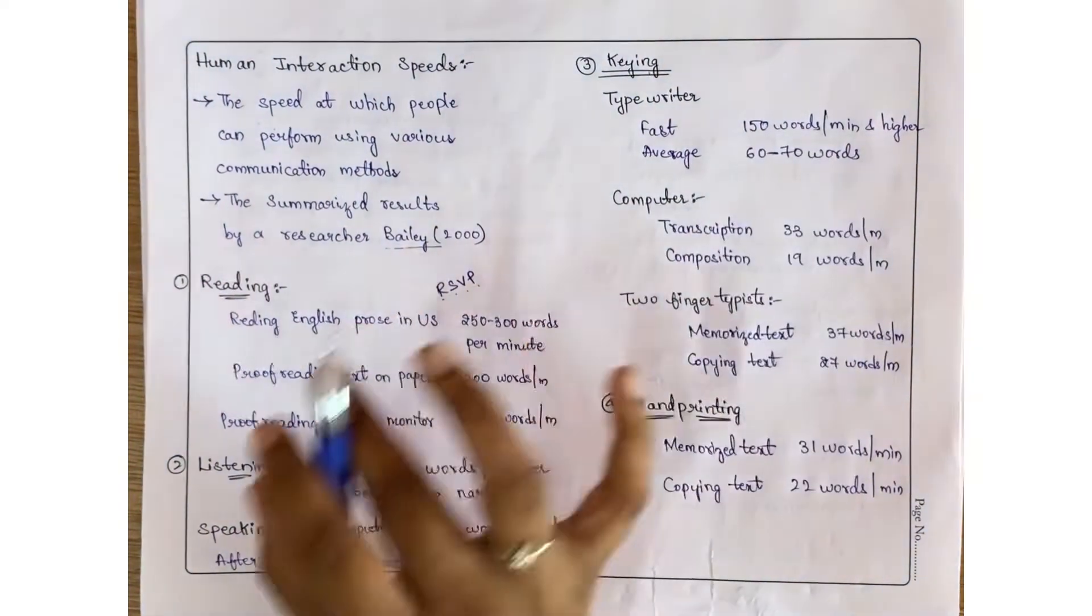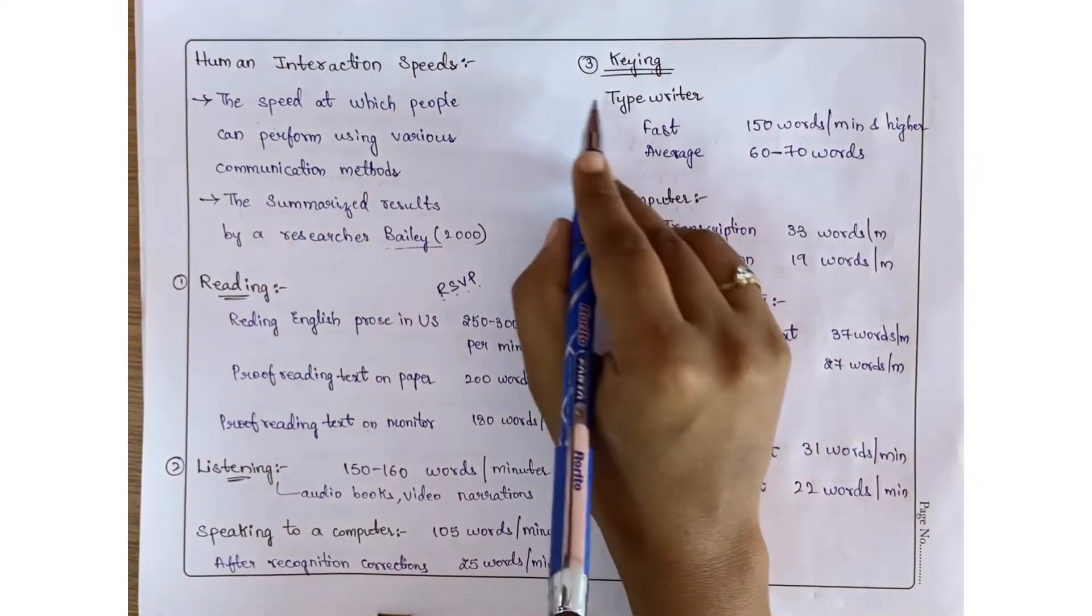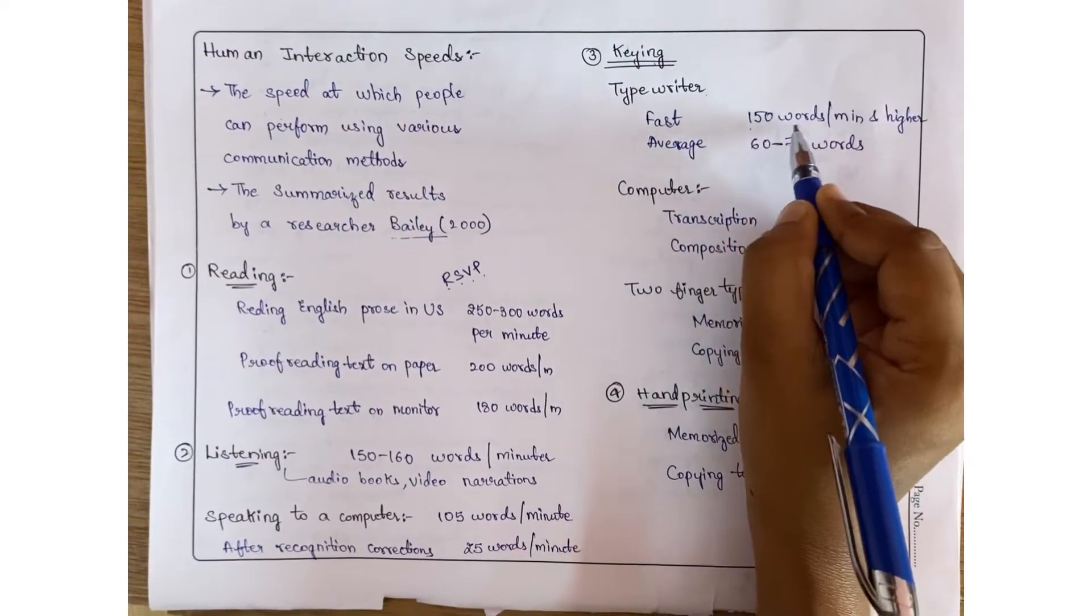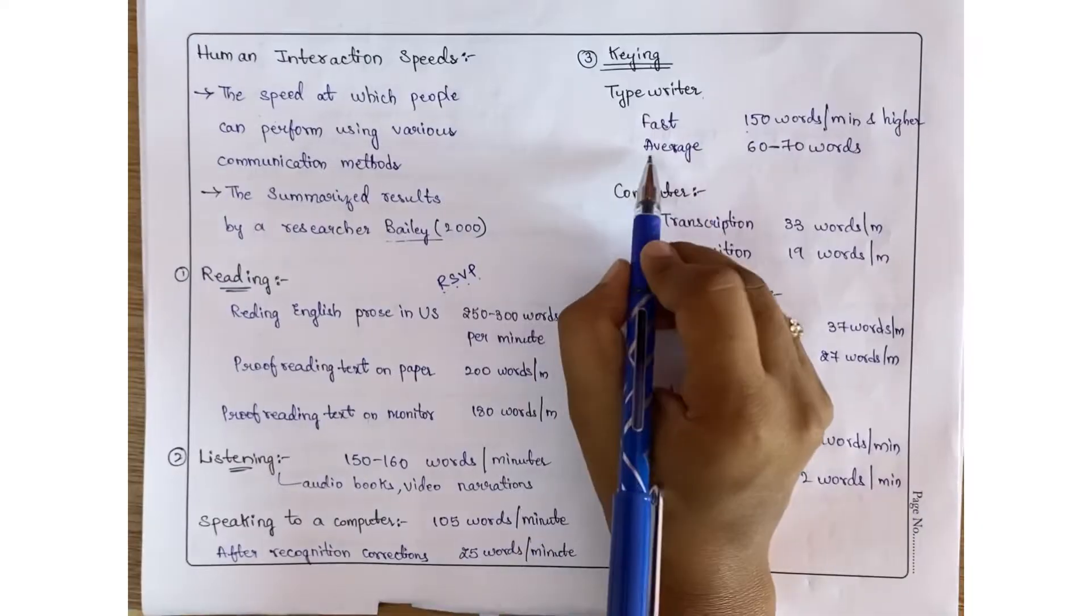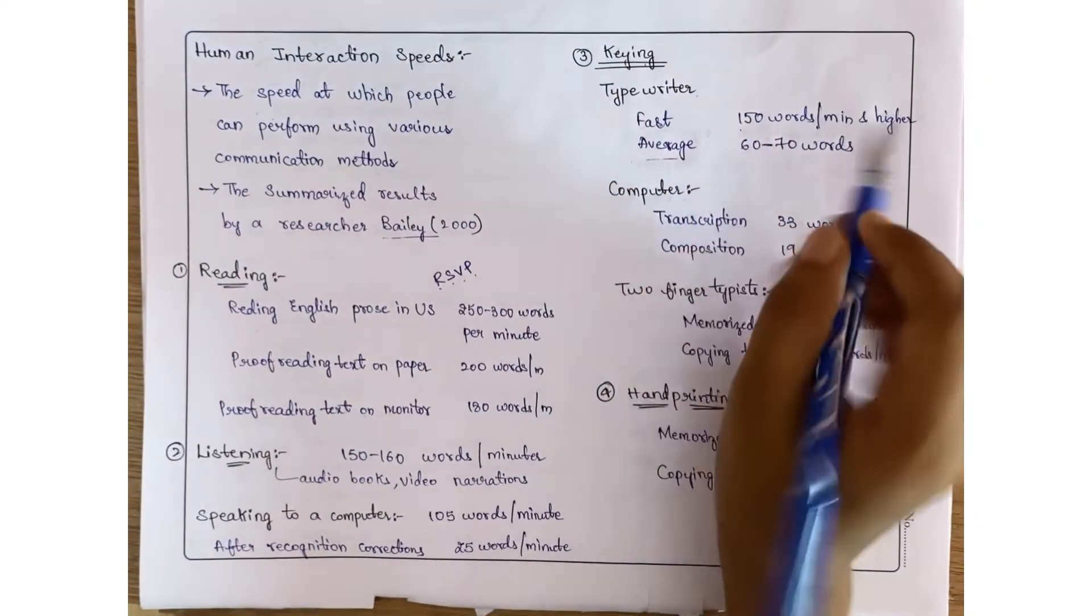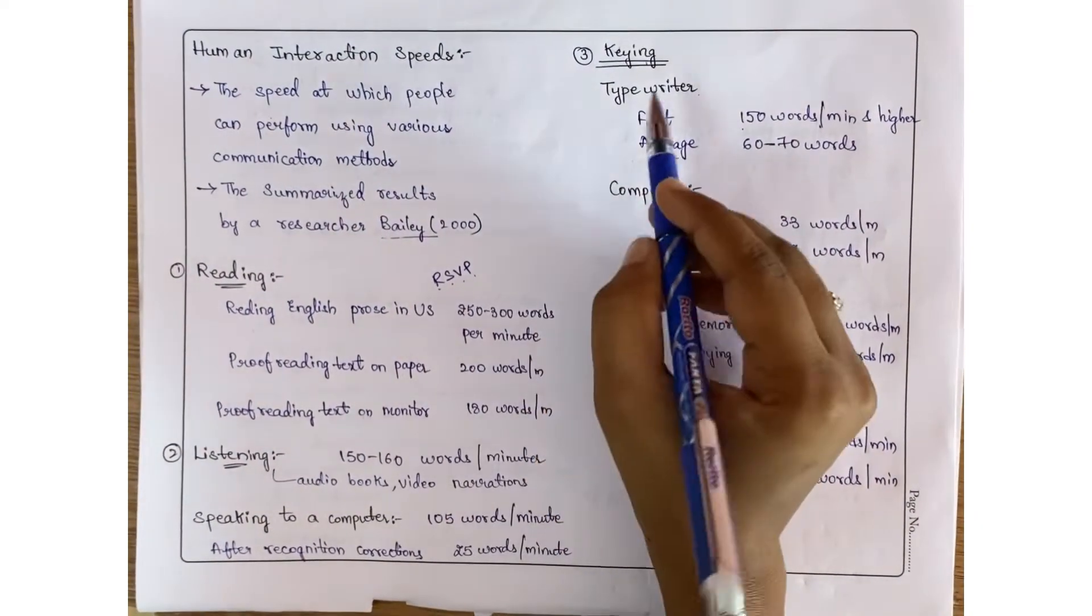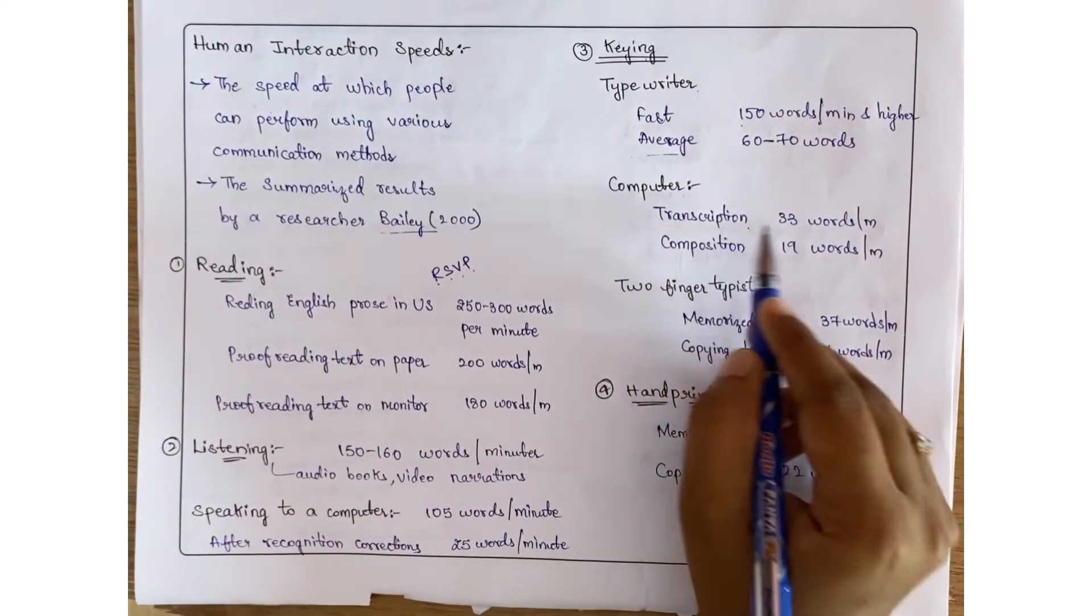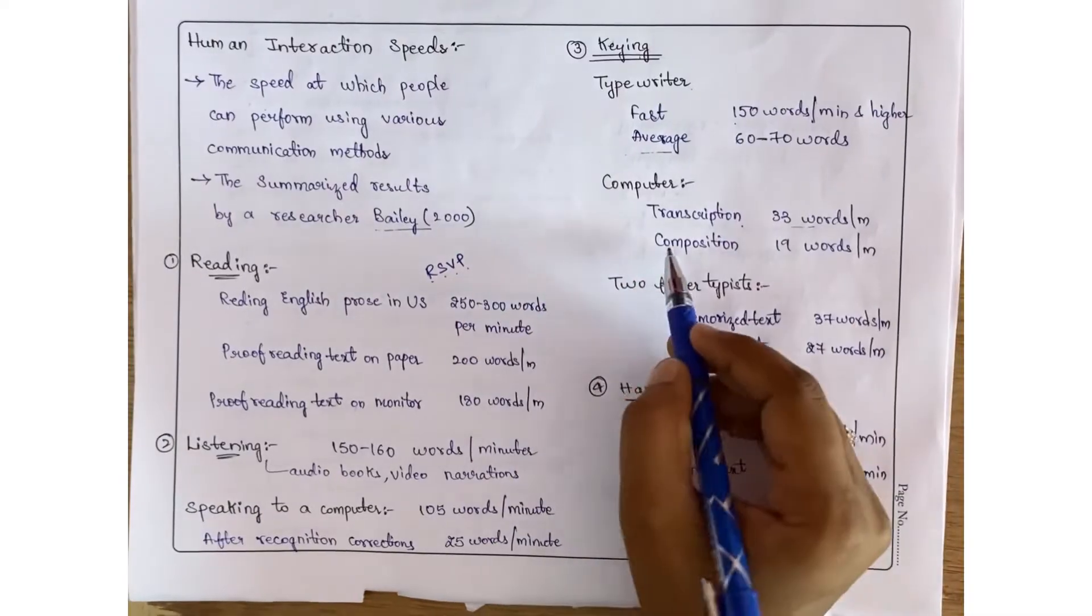Coming to typing: a very fast typewriter typist can type 150 words per minute or higher. The average person types 60 to 70 words per minute. For computer typing, transcription is 33 words per minute.